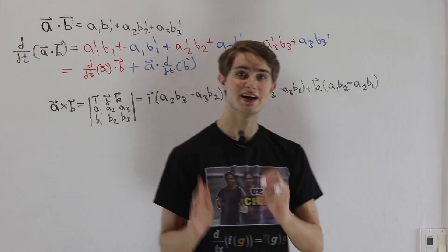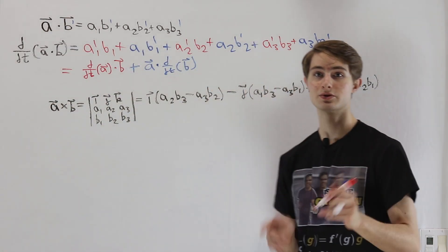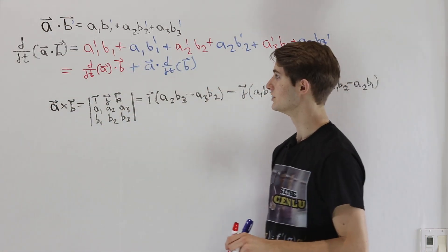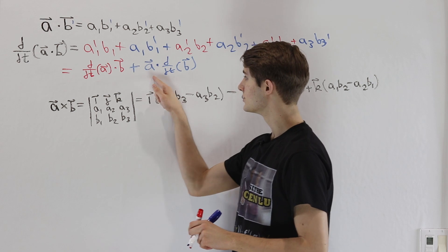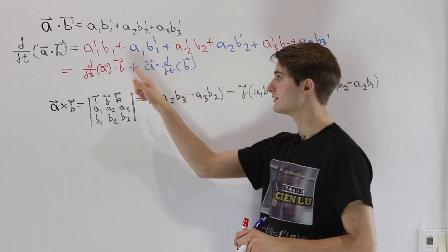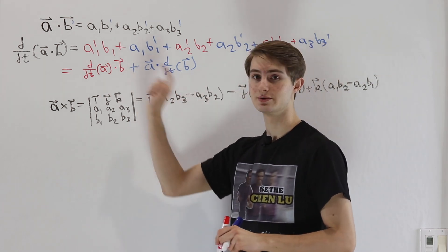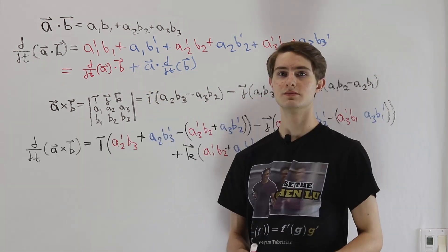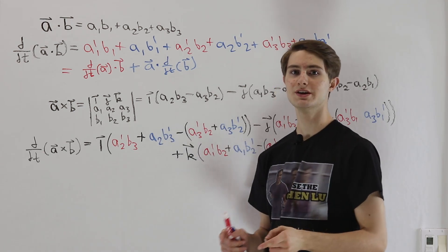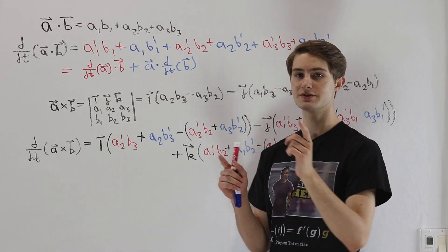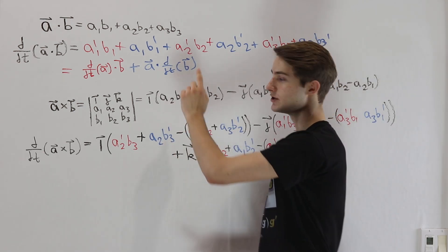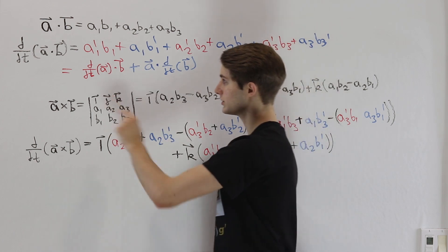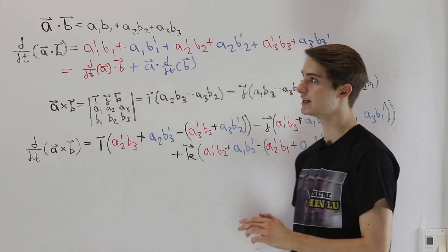Notice it looks exactly the same as the product rule for ordinary functions. We do the first times the derivative of the second and the second times the derivative of the first. Now, once we understand how the derivative of the dot product functions in this way, we can extend that same idea to the cross product.